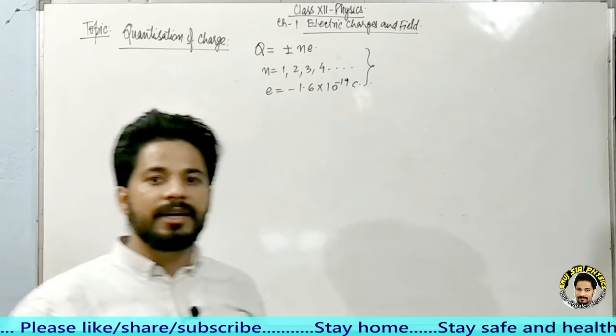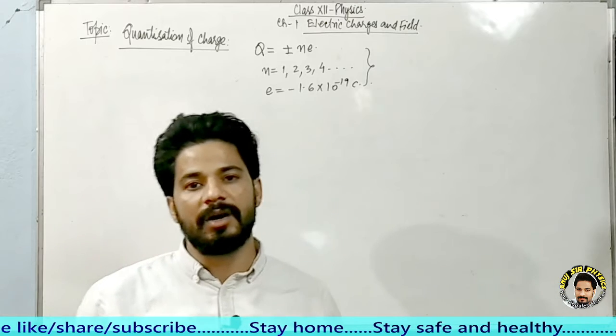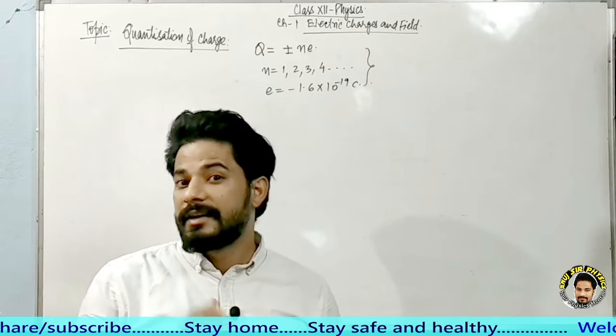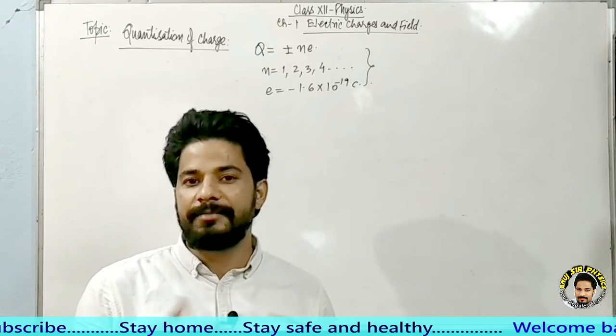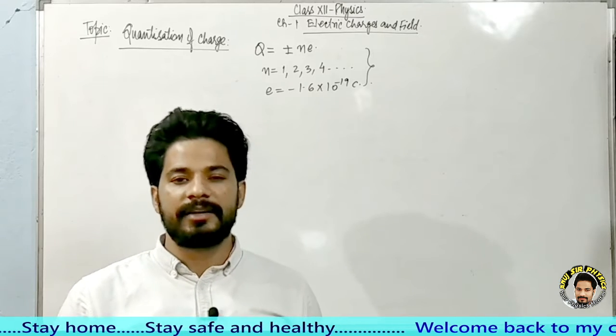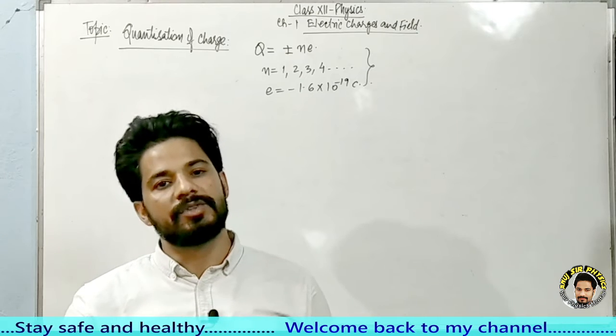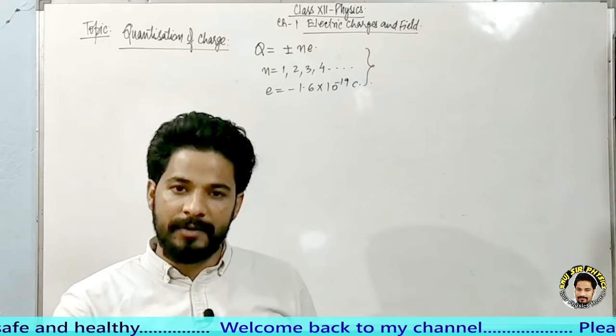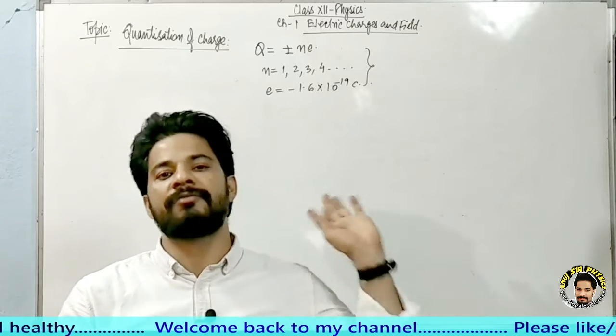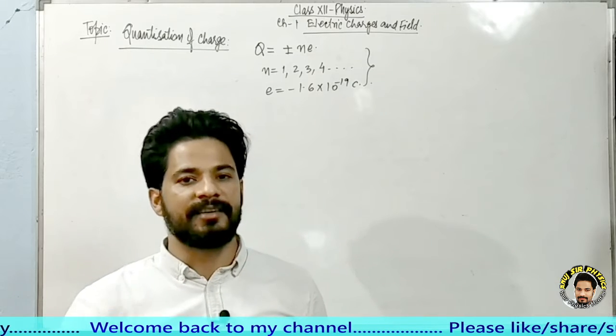As I have told you, kisi bhi body pe jo charge present hoga, woh charge electron ke charge ka, yani basic charge ka integral multiple hoga. That means suppose this is a body, how much charge is on this body? That charge, when you divide by electron's charge, will come in complete multiple form, not in fraction form.